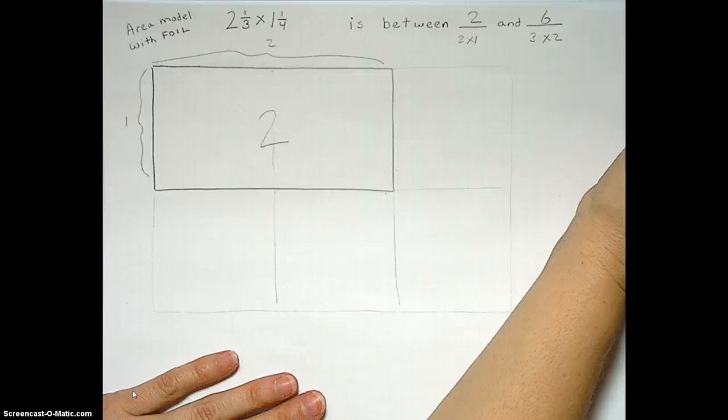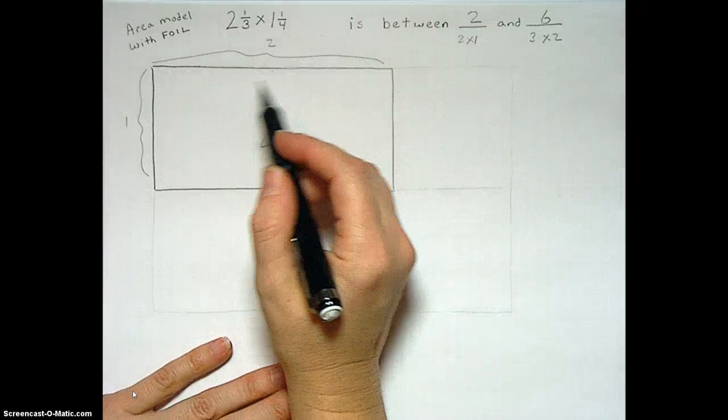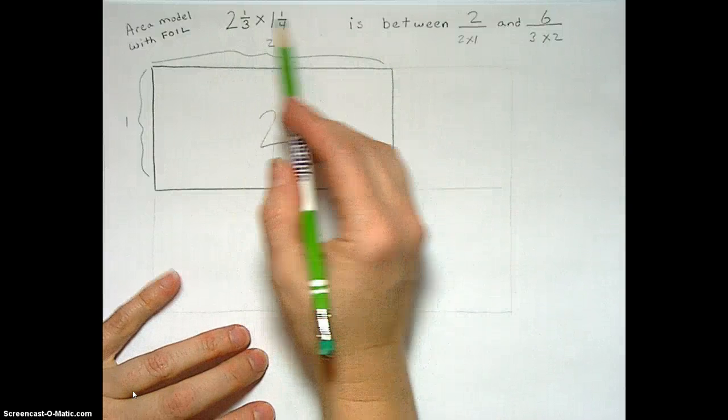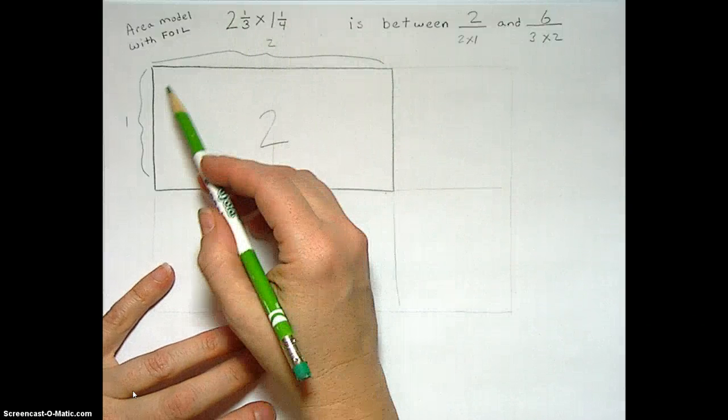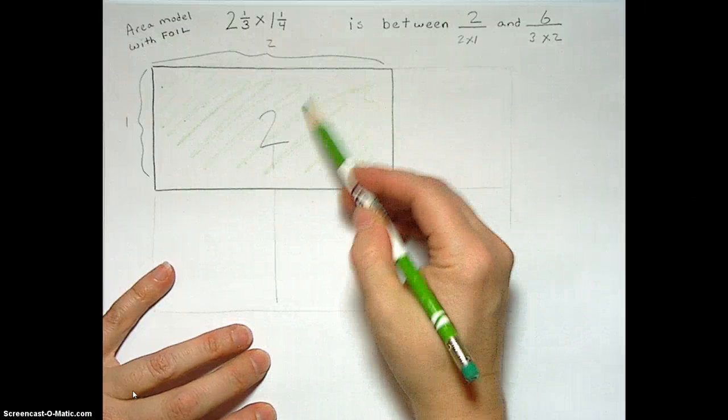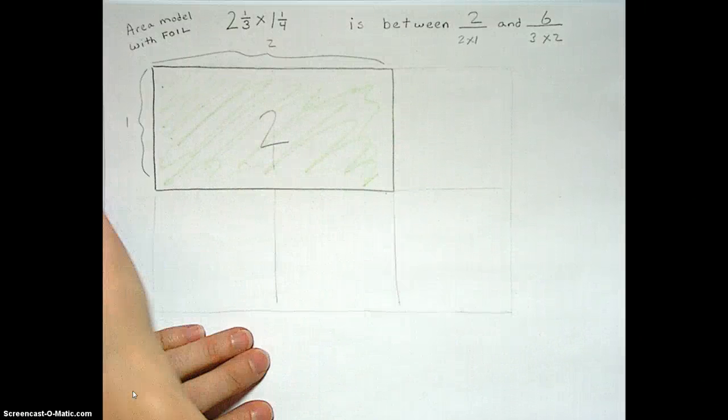Let's get more exact now. We don't just have 2. Let's first shade in our whole number part, the 2 by 1 that we know we have to be bigger than. There we go. We have to be bigger than that.